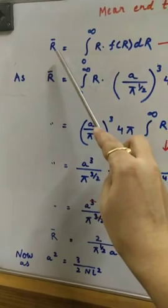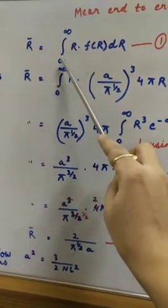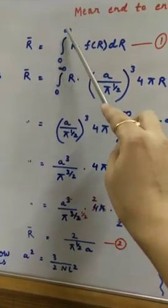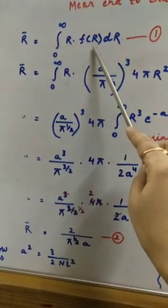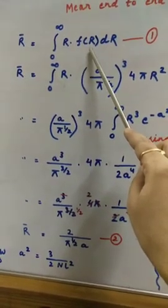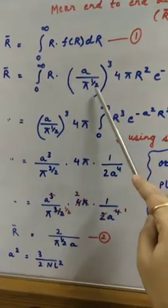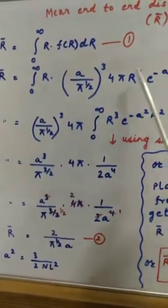To calculate the formula, that is integration limit zero to infinite, r, f(r), dr. We have studied f(r) earlier and the value of f(r), that is the probability, we will place this value.